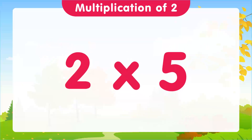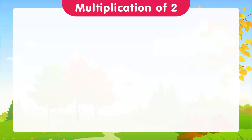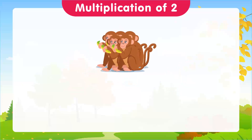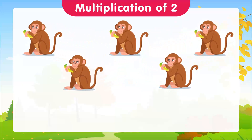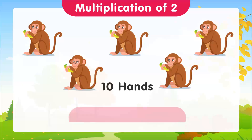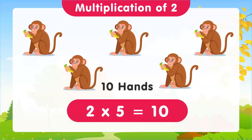And for 2 times 5, let's use monkeys. Imagine we have 5 monkeys. How many hands do they have between them? 10 hands. And that's our fifth multiplication: 2 times 5 is equal to 10.